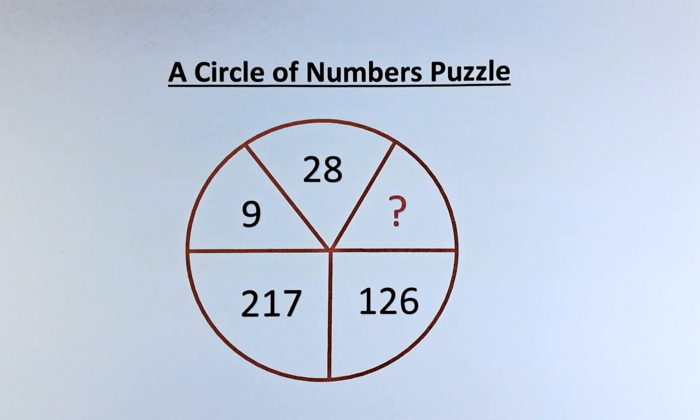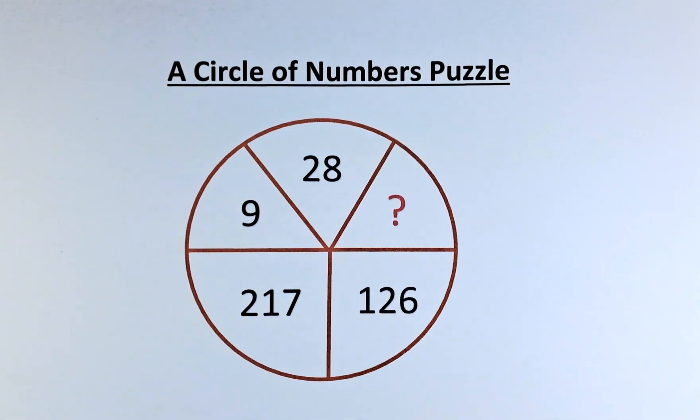Welcome back to this circle of numbers puzzle. This is a straightforward puzzle. This starts with 9, followed by 28, question mark, 126, and 217.